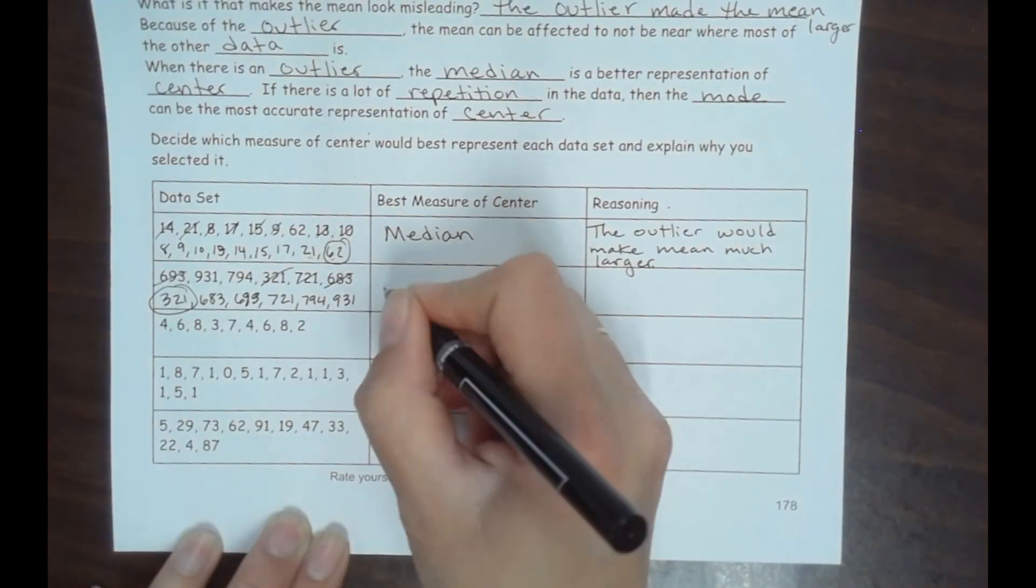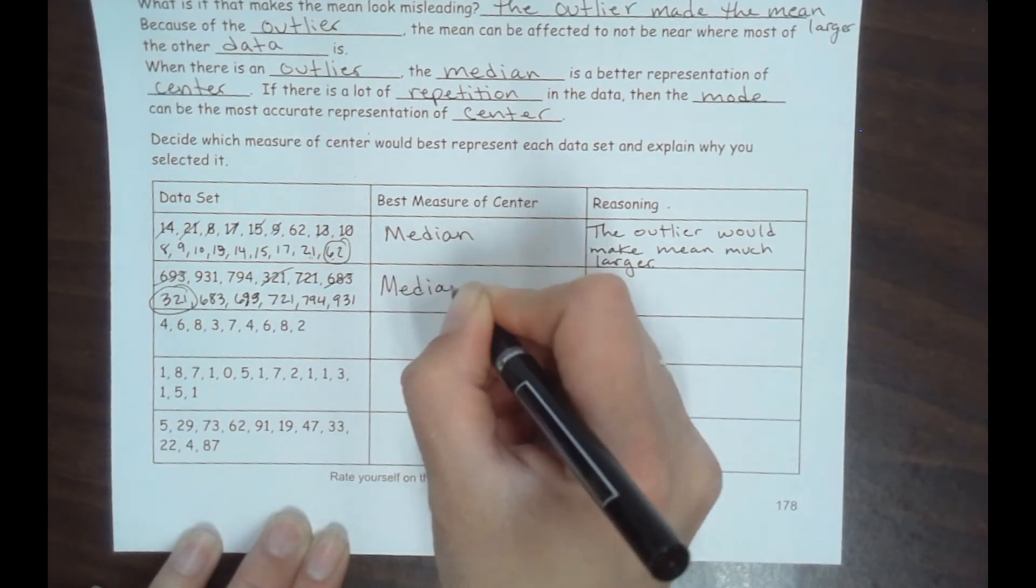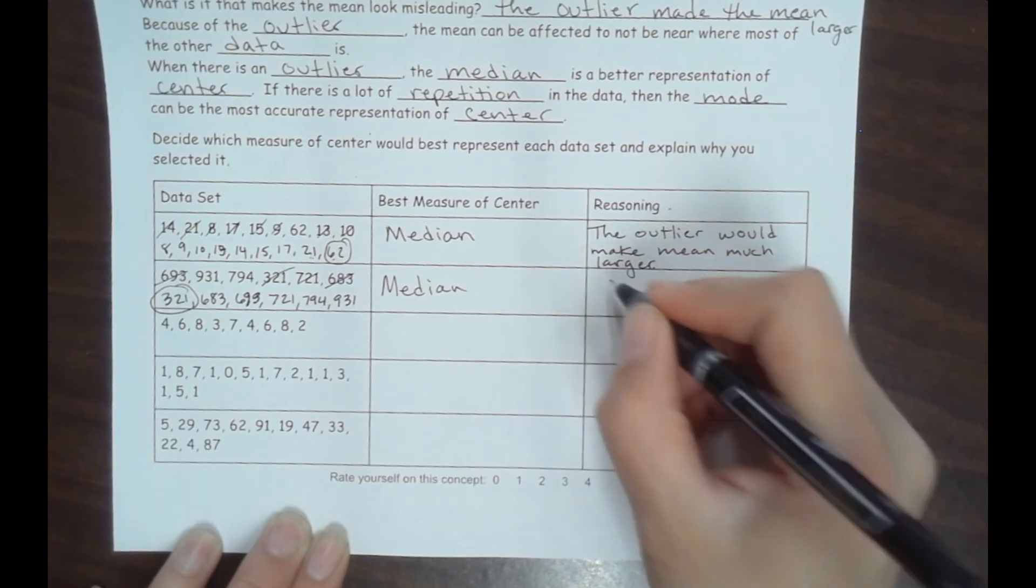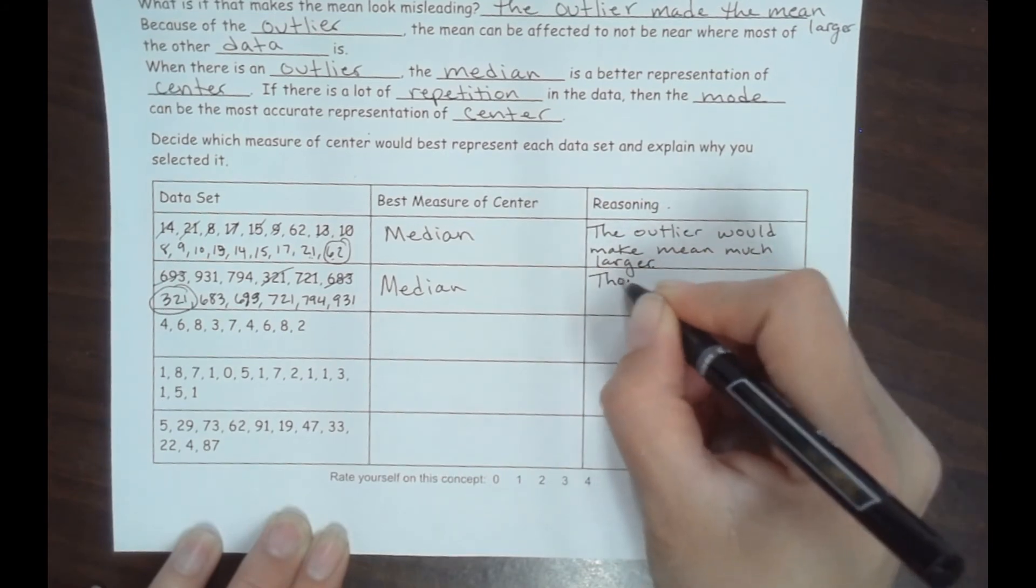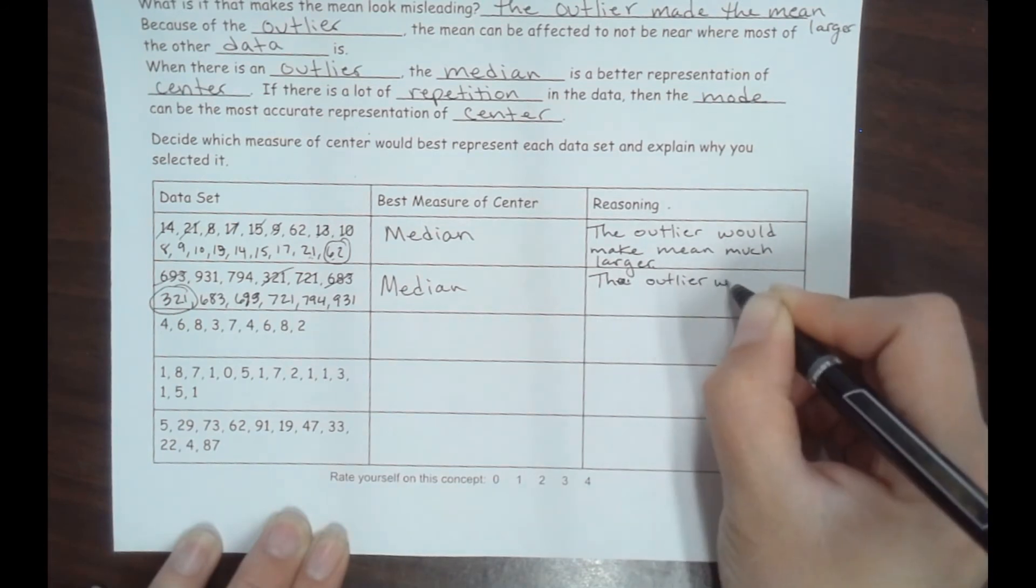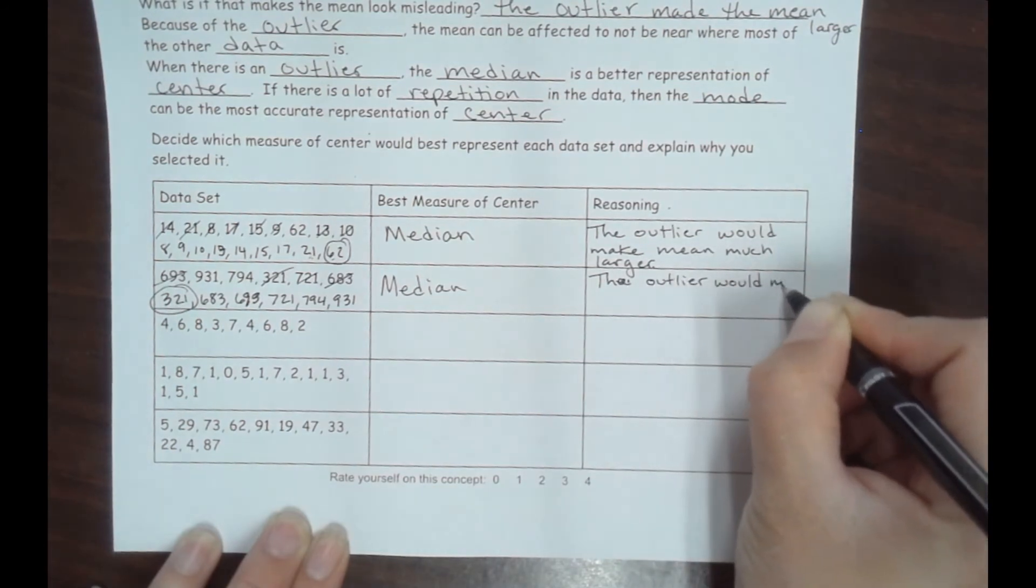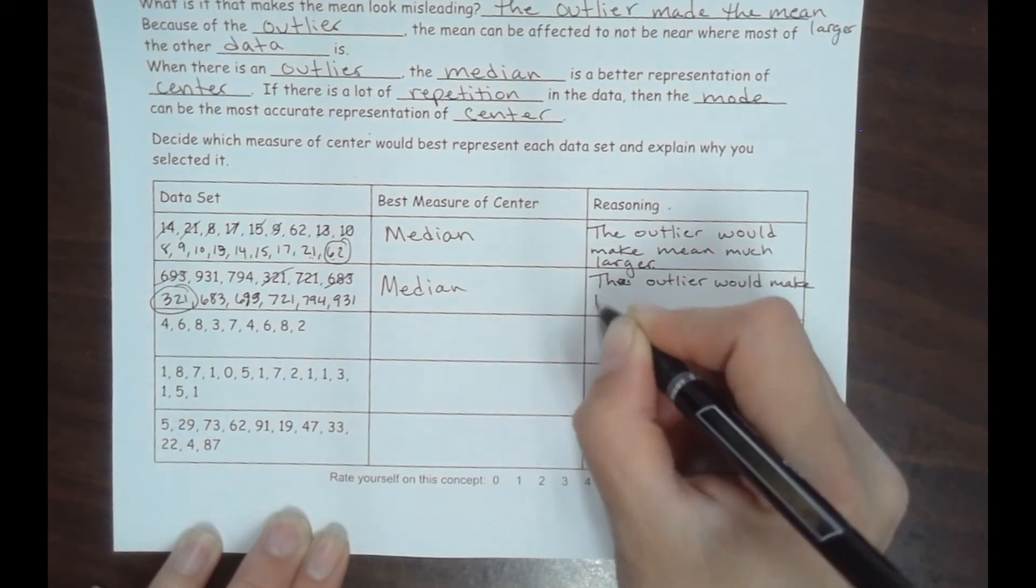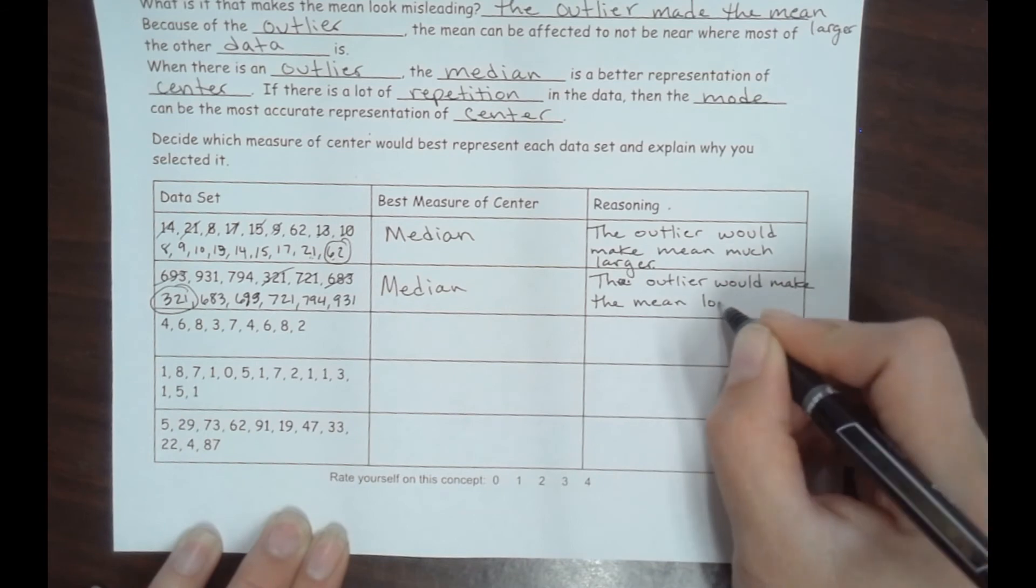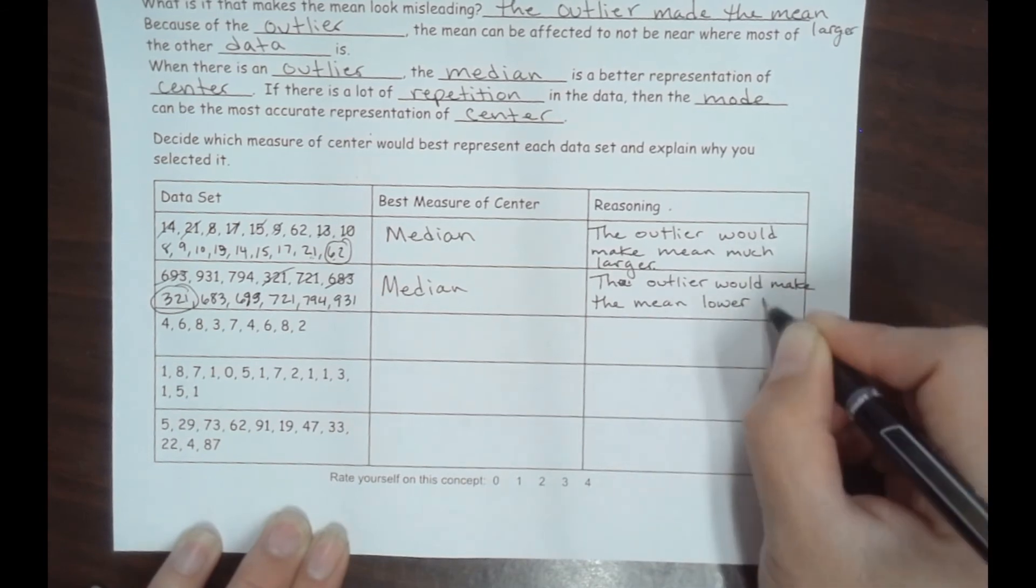So once again, there's no repetition here, so the median would be best because this time the outlier would make the mean lower than center.